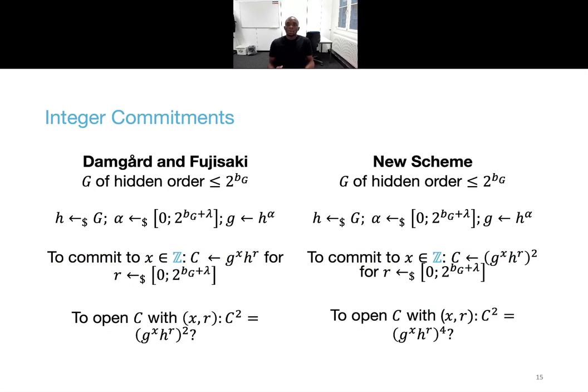Since the argument in the parameters only guarantees that g squared is in the subgroup generated by h squared, the computation of the commitment must now be squared, and the opening must be to the power of 4 to later again permit efficient arguments of knowledge of openings.